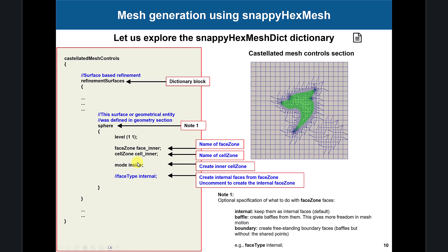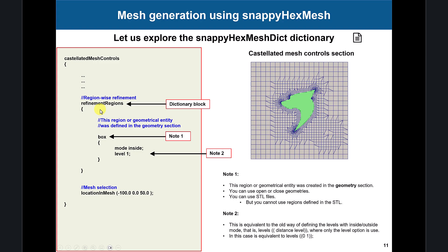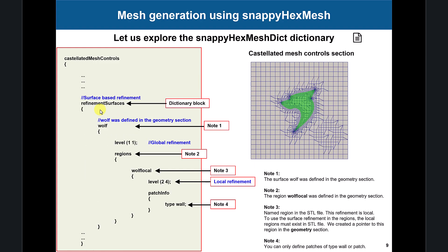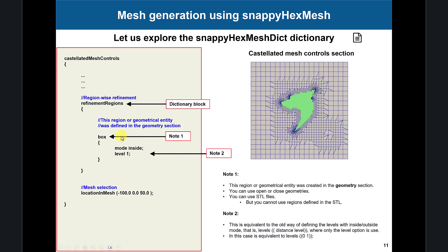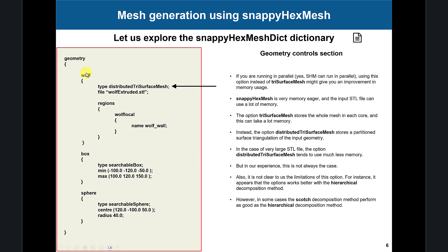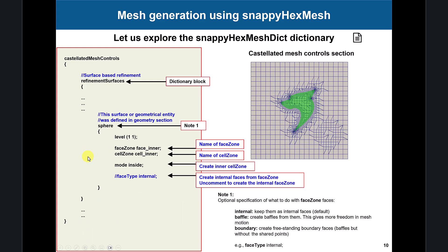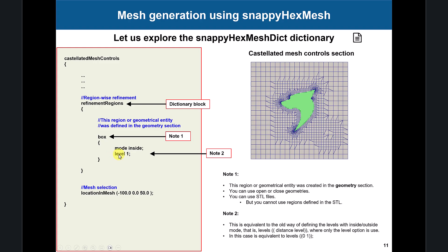Then this is how you control the buffer region. For refinement regions: first features/edges, then surface, and then you have volume regions. Here we have a volume region — a box that was created. You give a name and this is how you access that local object. Inside the box, put a refinement level of one. Very important: how do you remove cells? You have this keyword locationInMesh. If you put this point inside the STL it's going to remove the cells there; if you put it outside it removes those cells. You can also have multiple location mesh options.